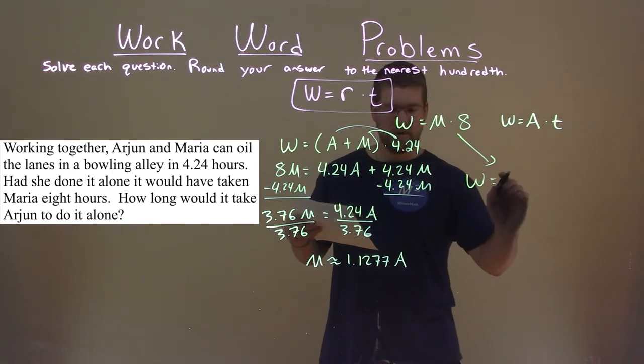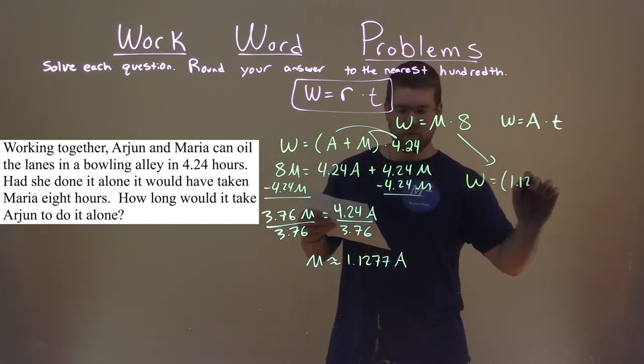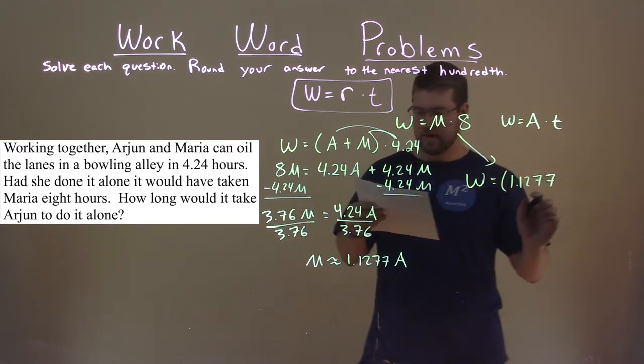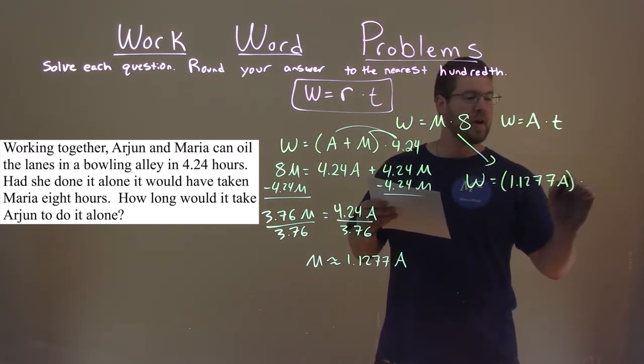So the work here is equal to 1.1277A times 8 hours.